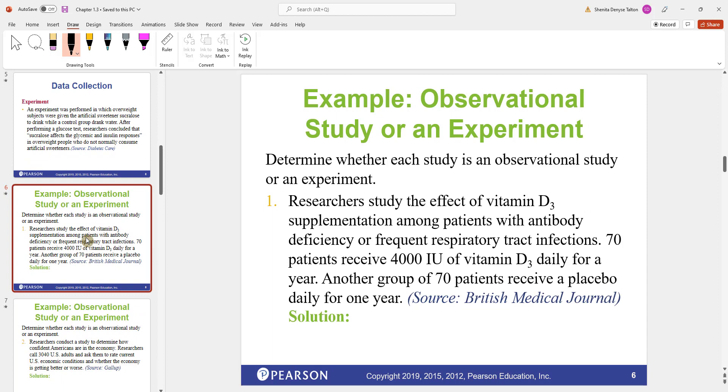Let's look at some examples. We're going to determine whether or not each study is an observational study or an experiment. Researchers studied the effect of vitamin D3 supplementation among patients with antibody deficiency or frequent respiratory tract infections. 70 patients received 4000 IU of vitamin D3 daily for a year. Another group of 70 patients received a placebo daily for a year. In this case, this will be considered an experiment, and the reason why this is an experiment is because a treatment was applied. The treatment that they applied is the vitamin D3.